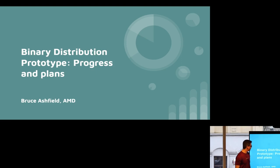We're going to talk about the binary distribution prototype progress and plans, which Philip was talking about as part of the five-year planning and then the Sovereign Tech Fund work.